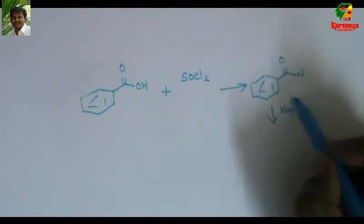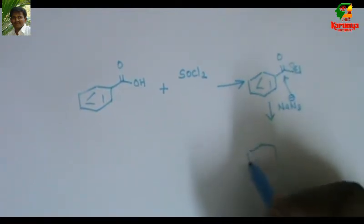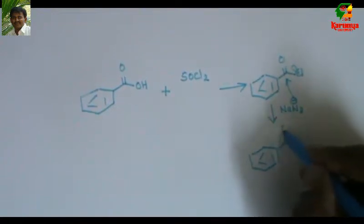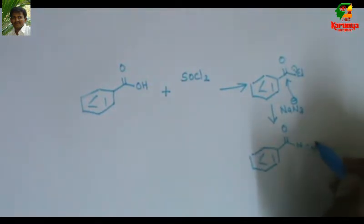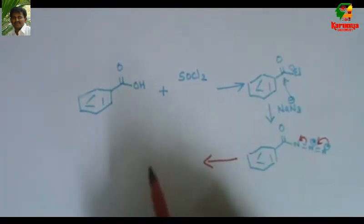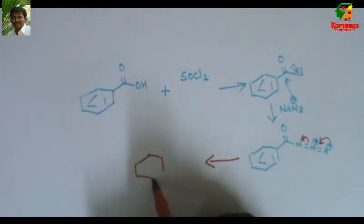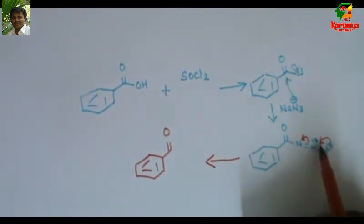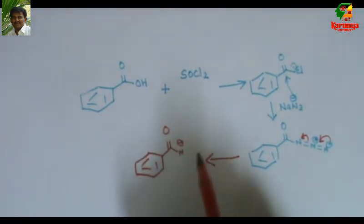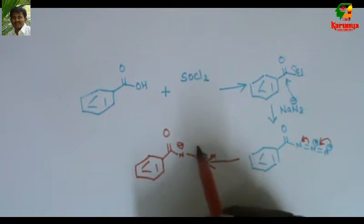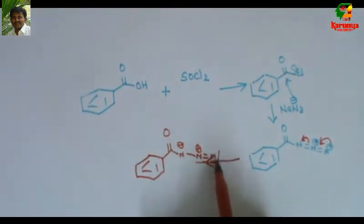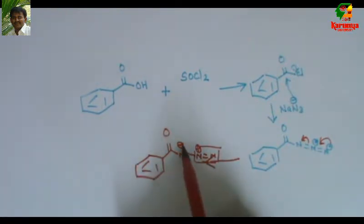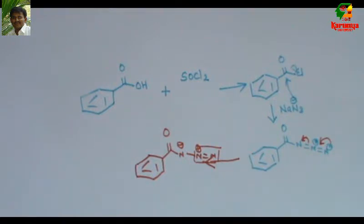Azide (N3-) attacks here to give acyl azide. This acyl azide decomposes to give a nitrene intermediate. You can see here this minus charge goes here. Now this N2 is a leaving group and there is a minus charge on nitrogen. So when a minus charge and a leaving group are on the same atom, it will form nitrene.